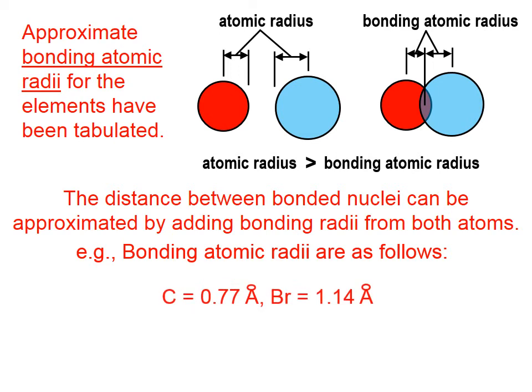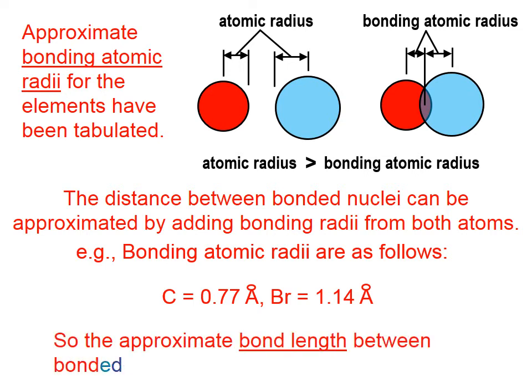The distance between bonded nuclei can be approximated by adding the bonding radii from both atoms. So for example, if the bonding atomic radii for carbon and bromine are given, whenever you have a carbon-bromine bond, the distance between those nuclei is approximately the sum of those, which is 1.91 angstroms.